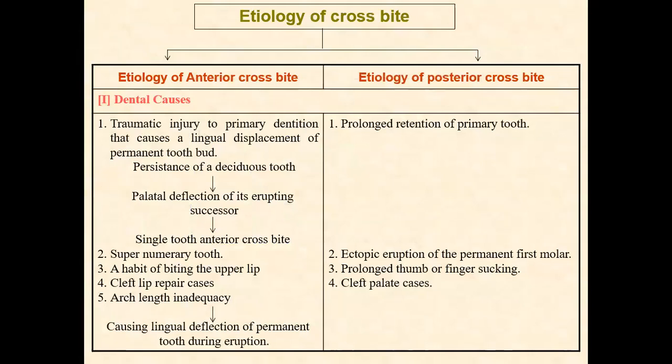Coming to the etiology of cross bites, I have compiled all the etiology in a tabular format. There are basically two types of cross bites: anterior cross bite and posterior cross bite. Coming to the dental causes of anterior cross bite first.